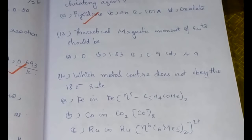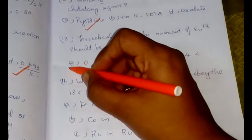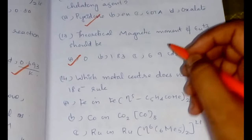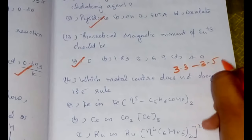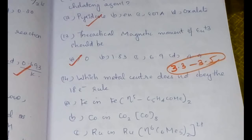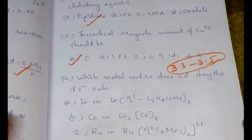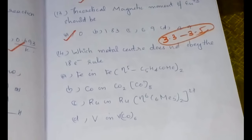The next question is: theoretical magnetic moment of europium 3+ should be zero. The theoretical magnetic moment is zero, and the observed magnetic moment will be something around 3.32 or 3.5. There is an anomaly in the theoretical and observed magnetic moments of some of the lanthanides, and this is one of the most important ones in that.